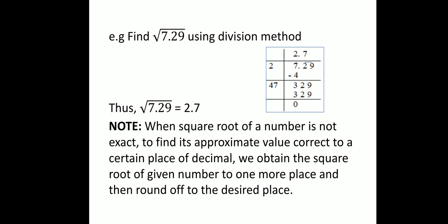Note: when the square root of a number is not exact, to find its approximate value correct to a certain place of decimal, we obtain the square root of the given number to one more decimal place and then round off to the desired place.